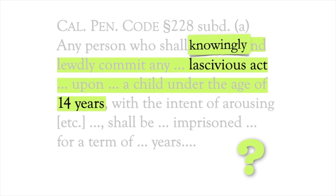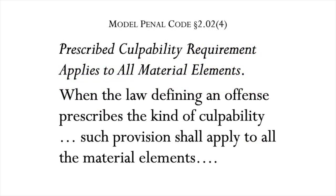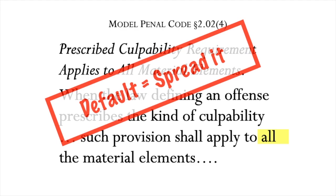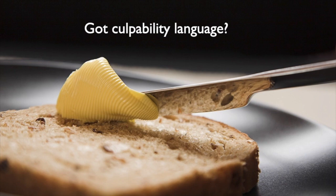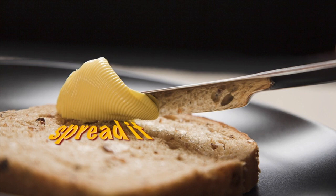The Model Penal Code provides: when the law defining an offense prescribes the kind of culpability, such provision shall apply to all the material elements. If there are culpability terms, they apply to all the material elements. In other words, under the Model Penal Code, the default is: spread it. Have you already got culpability language in the statute? Then you spread it around to every material element. We will drill deeper into the Olson statute in our next video installment.